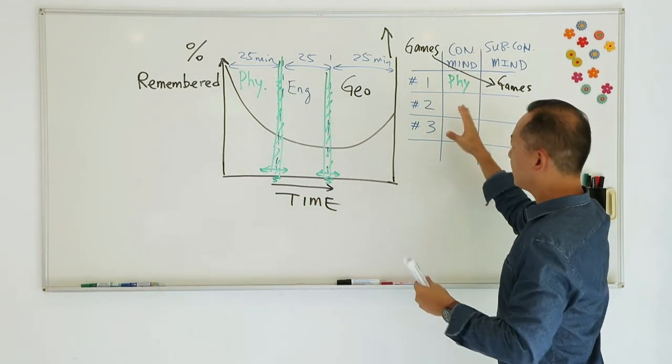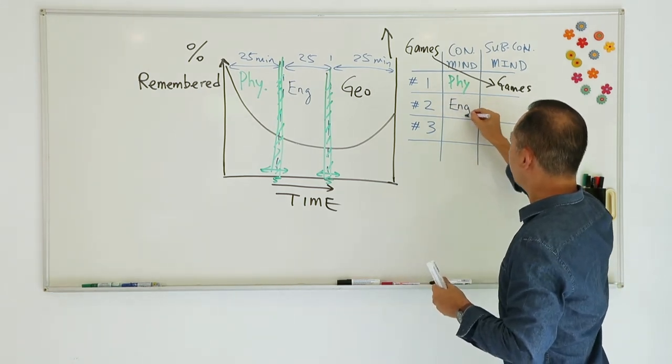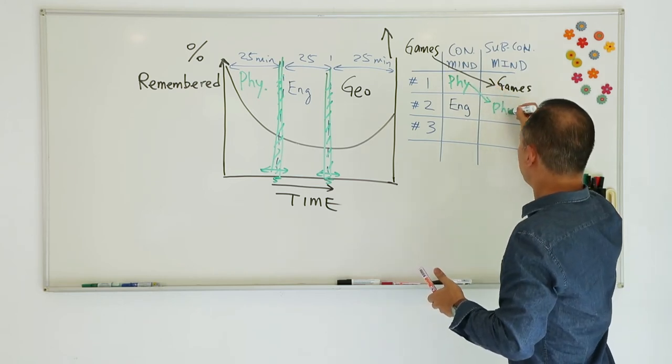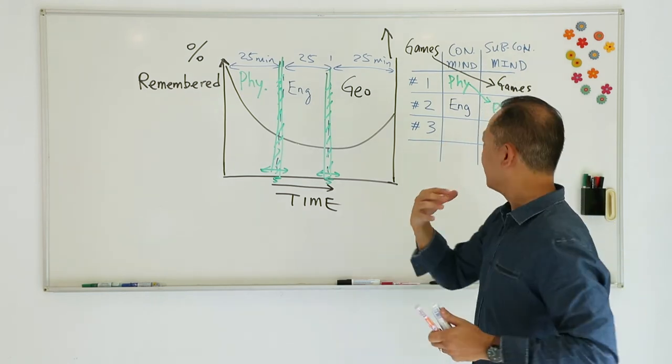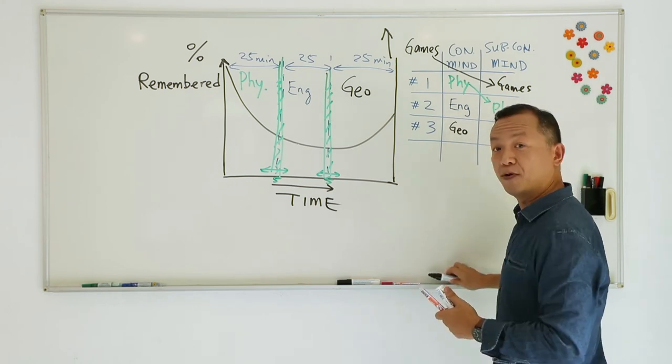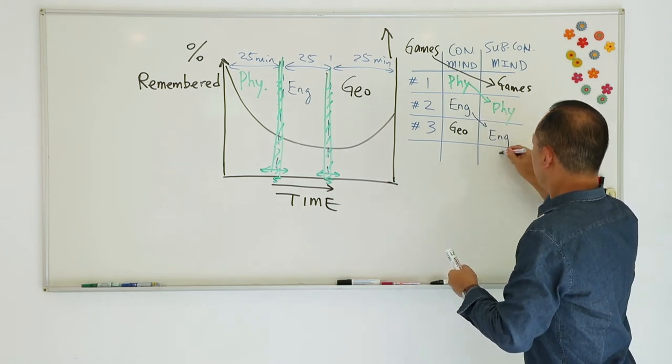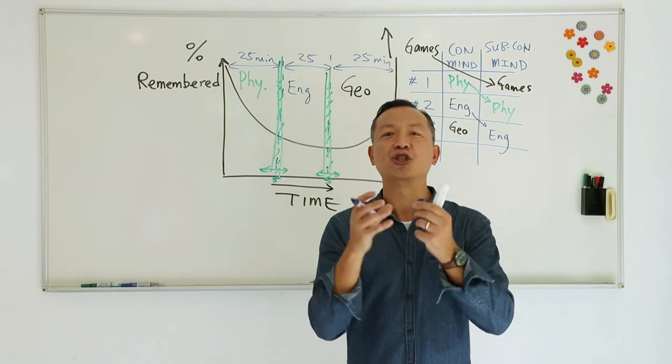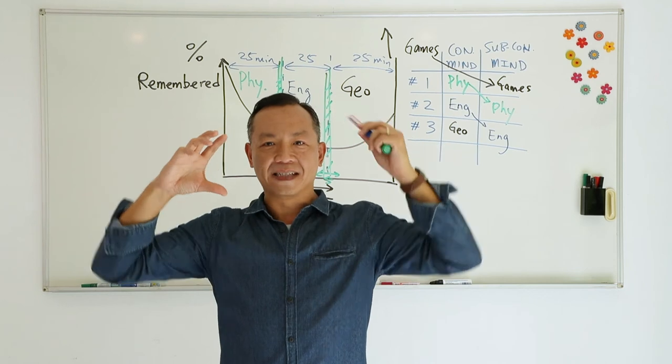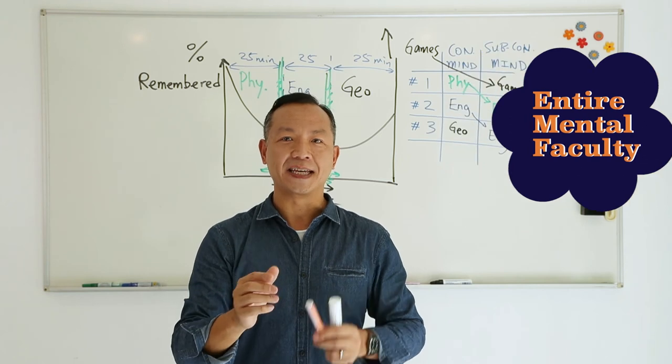If you follow the system here, it will work out really well for you. As you study English, for example, now you have a different subject at the back of your mind. And likewise, when you now study the most enjoyable subject toward the end, you are going to have English being consolidated, being digested in the subconscious mind. And when you do that, you are now using the entire mental faculty to your advantage. So this is how you can start studying smarter.